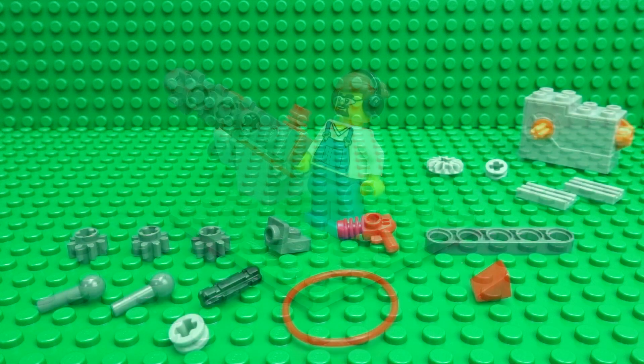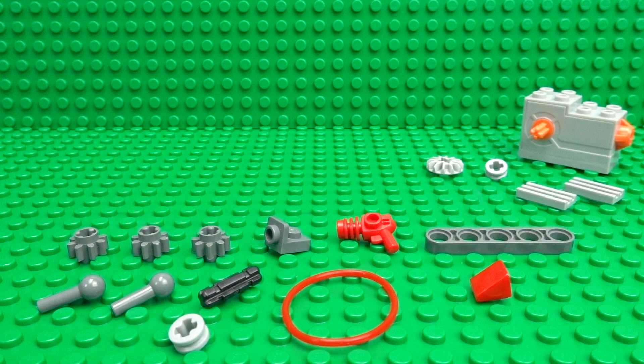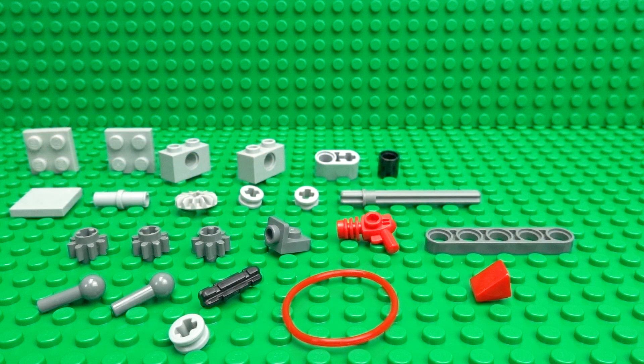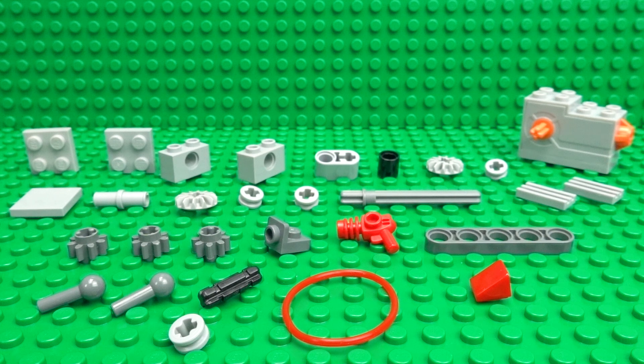This is what you'll need to build the wind-up motor version, and these parts are for the manual hand-cranked version. And as always, I'll leave links to where you can find the rarer pieces which I've used in the description below.